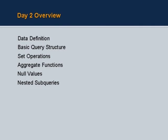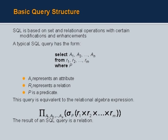So what are we going to cover today? We will be talking about the basic query structure of SQL, some basic set operations, aggregate functions, null values, and nested subqueries. This is the general form of a simple SQL query: SELECT a list of attributes or column names, FROM a list of relation names, WHERE some condition p.